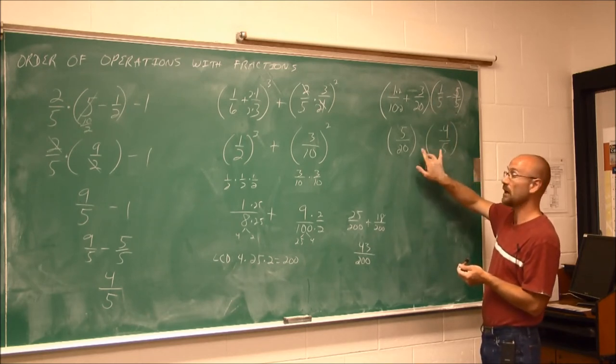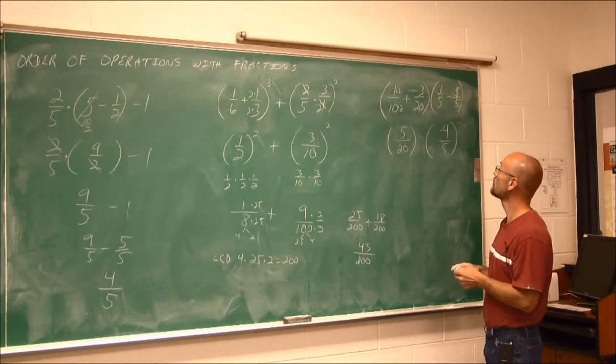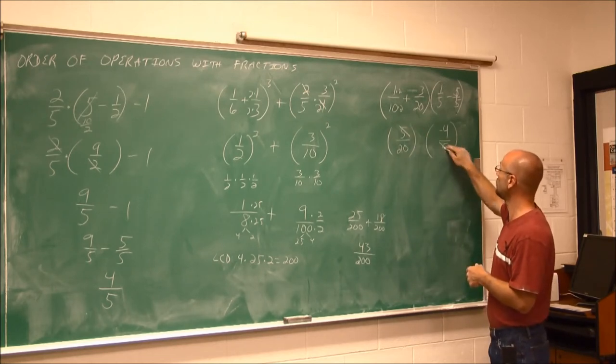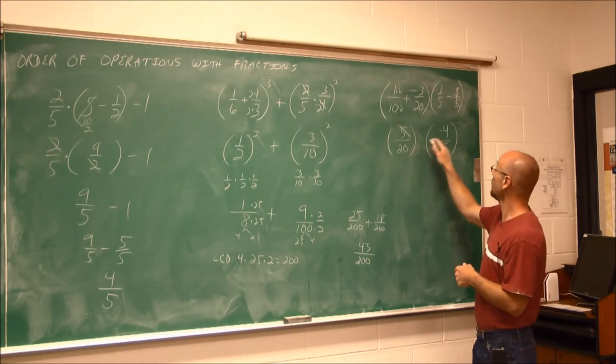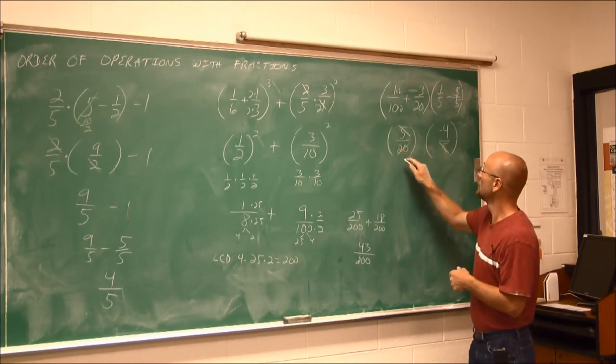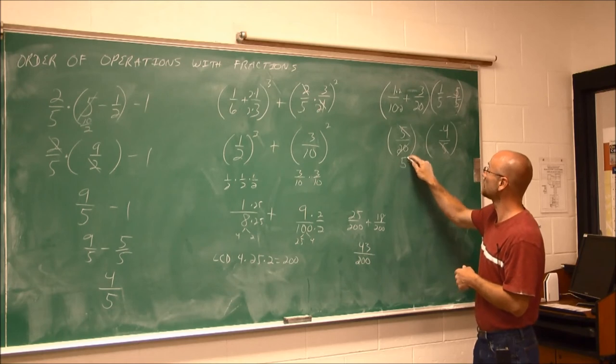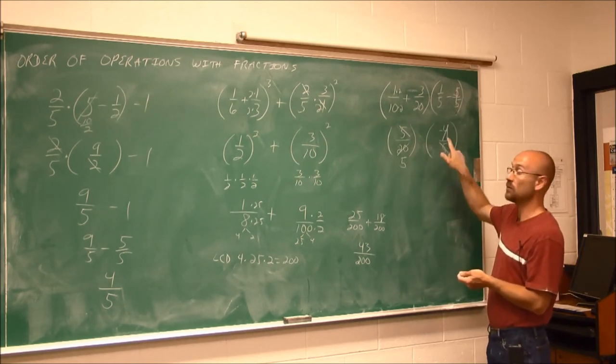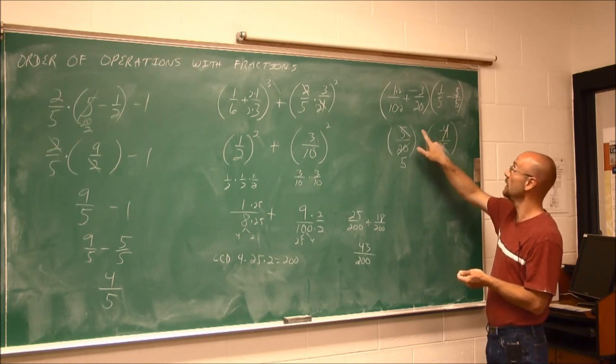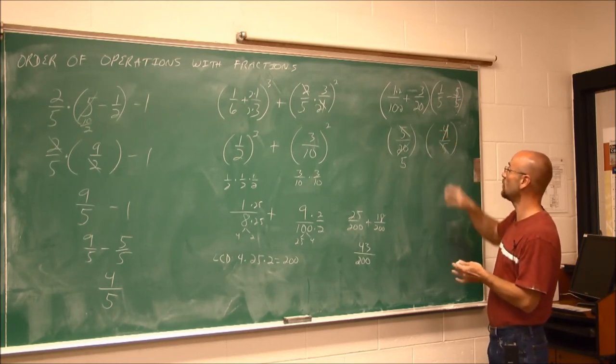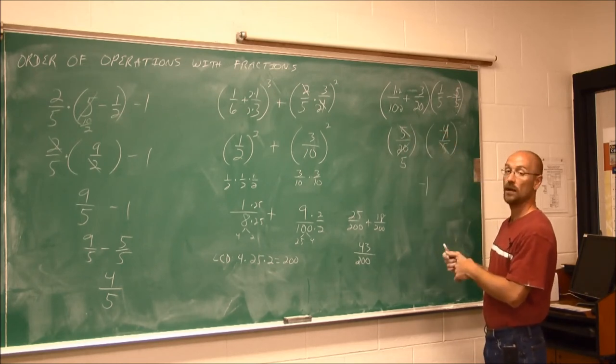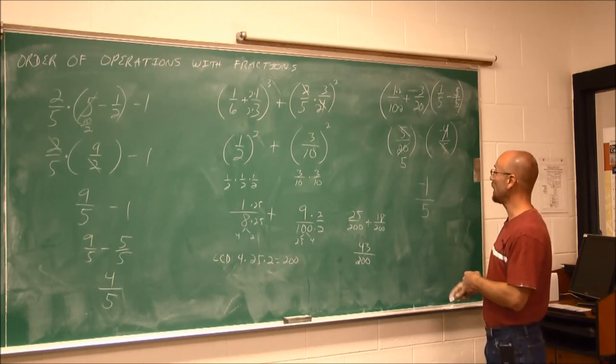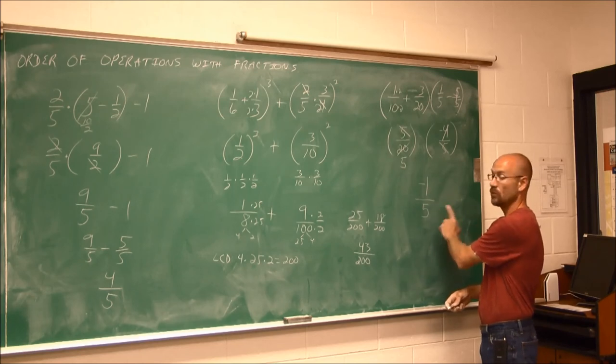Now we can do the multiplication by adjacent parentheses here. And since I'm doing multiplication, I can reduce. I see this 5 will reduce that 5. And 4 and 20 have a common factor, which is 4. So that makes this 5 and this 1. Now be careful. We have that negative sign. It's 1 times a negative 1. So we have a negative 1 in our numerator. And 5 times 1 is just 5. So we get a negative 1-fifth.